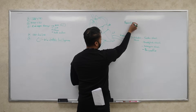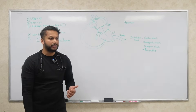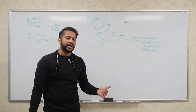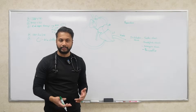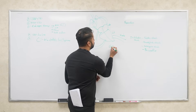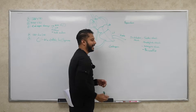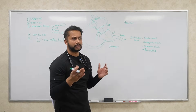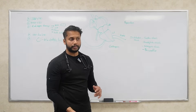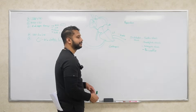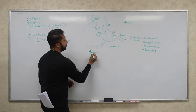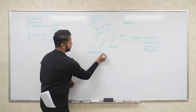Hypovolemic shock means you're dehydrated — too much diarrhea, not drinking enough water, or losing blood. Whether you lost blood or fluid, the end result is hypovolemia. Cardiogenic shock occurs when a patient has an acute MI or heart failure and the heart isn't pumping blood out adequately, so cardiac output is low and blood pressure drops.